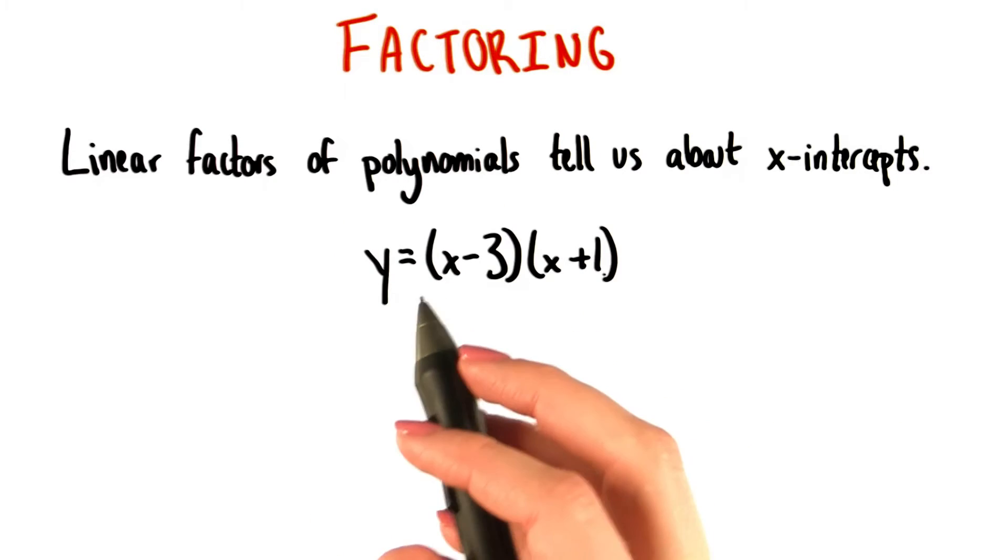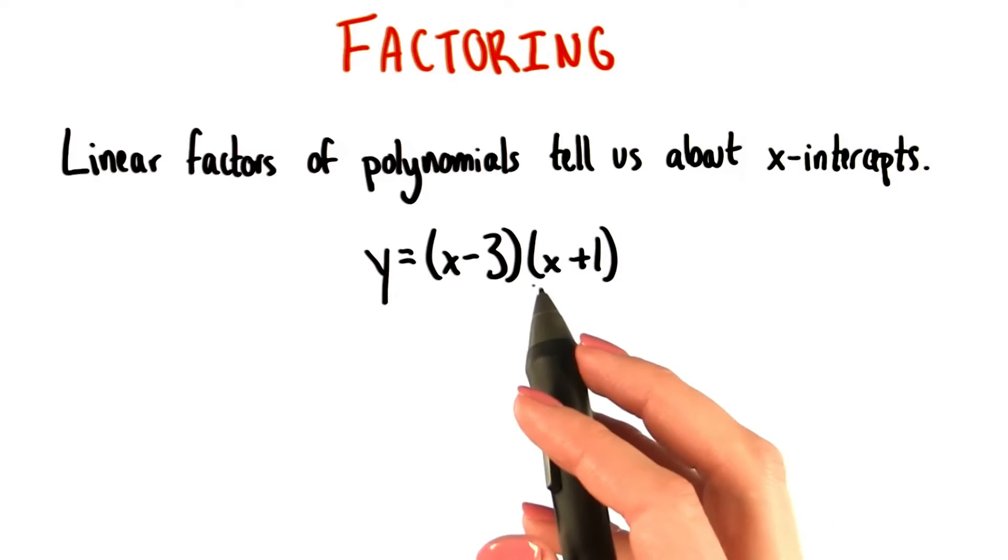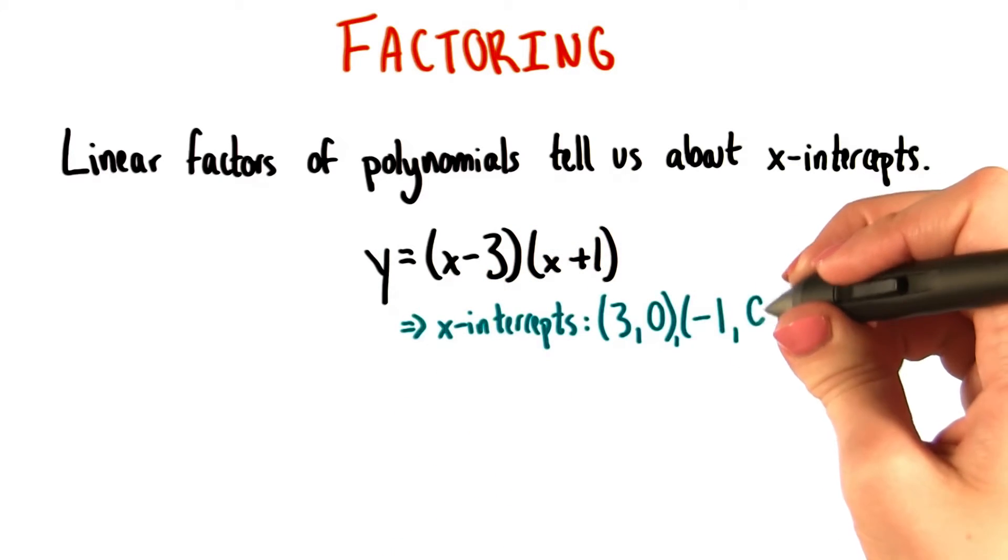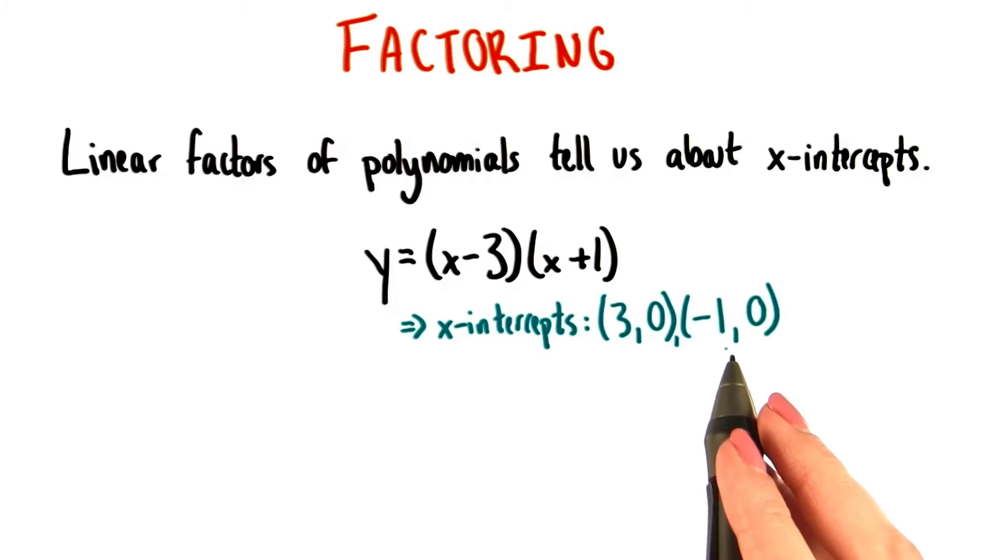So if we have an equation like y equals x minus 3 times x plus 1, it's going to have x-intercepts of 3, 0 and negative 1, 0.